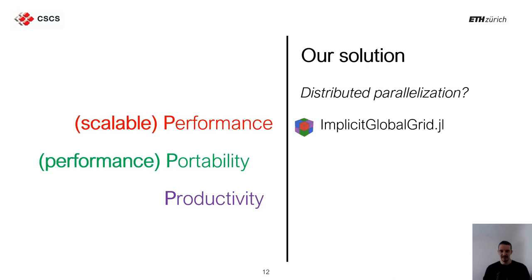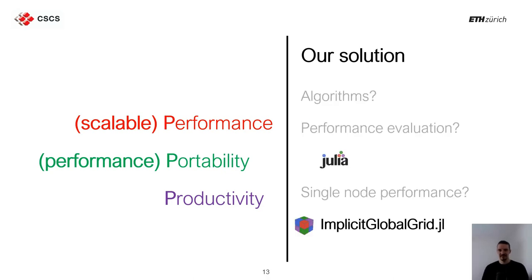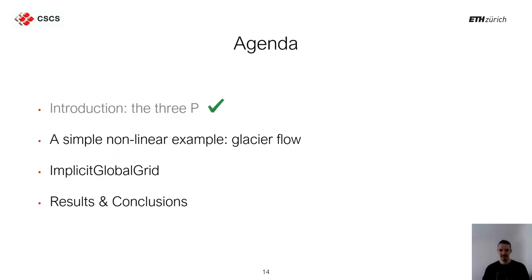The package ImplicitGlobalGrid does exactly that for stencil-based applications. Here is a summary of this introduction: I've presented the three P's challenge. Now I'm going to present a simple nonlinear glacier flow example, which I'll use to illustrate our solution, then show how ImplicitGlobalGrid responds to the challenge, and finally report results and conclusions.